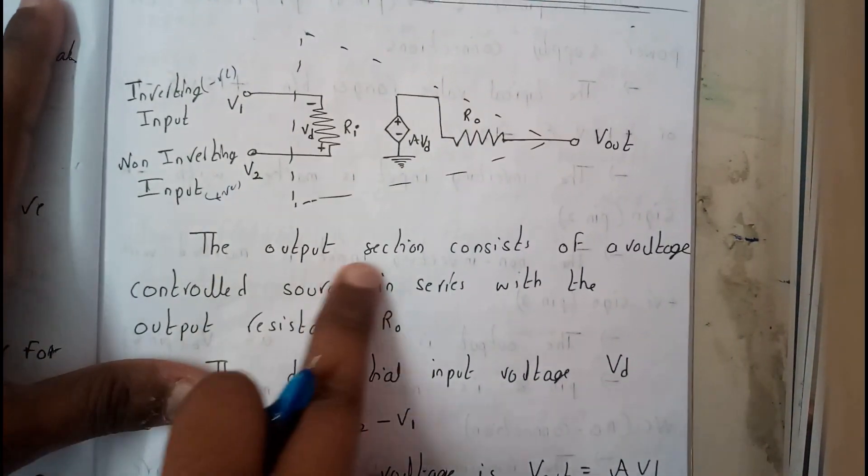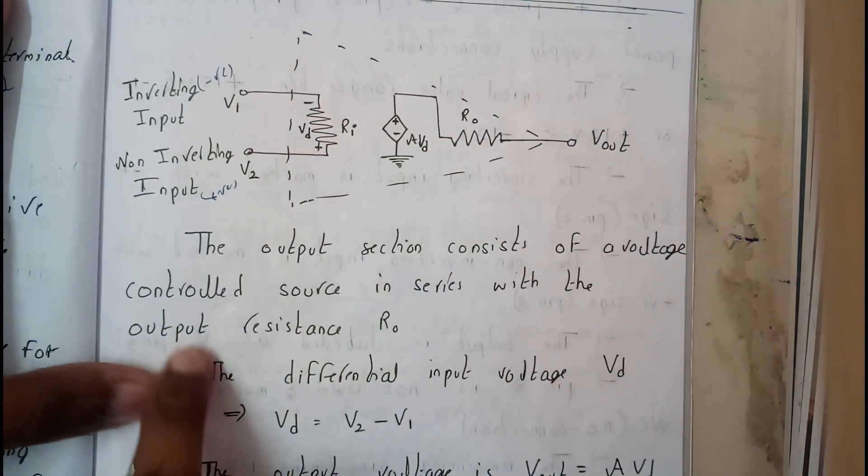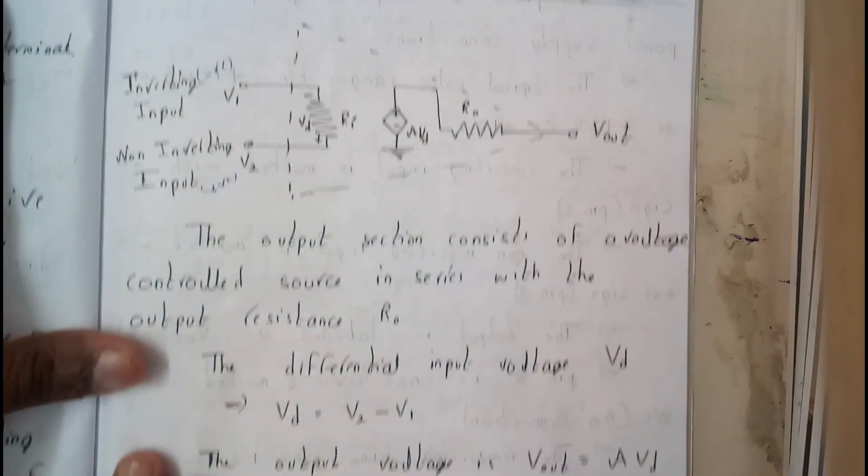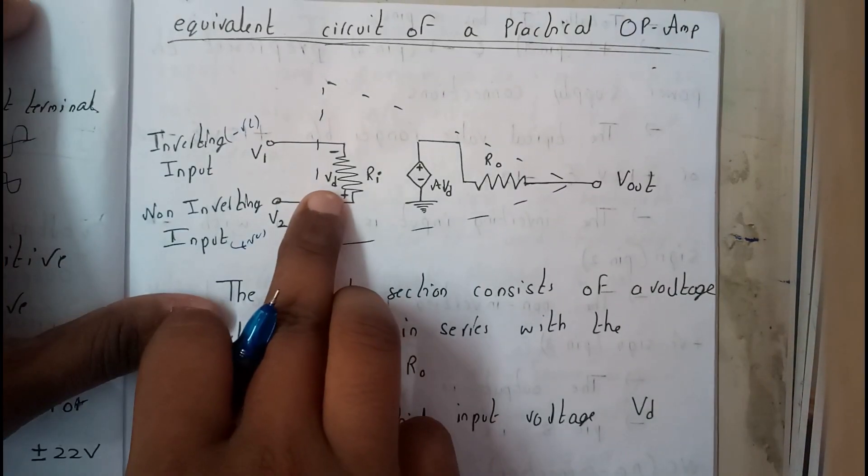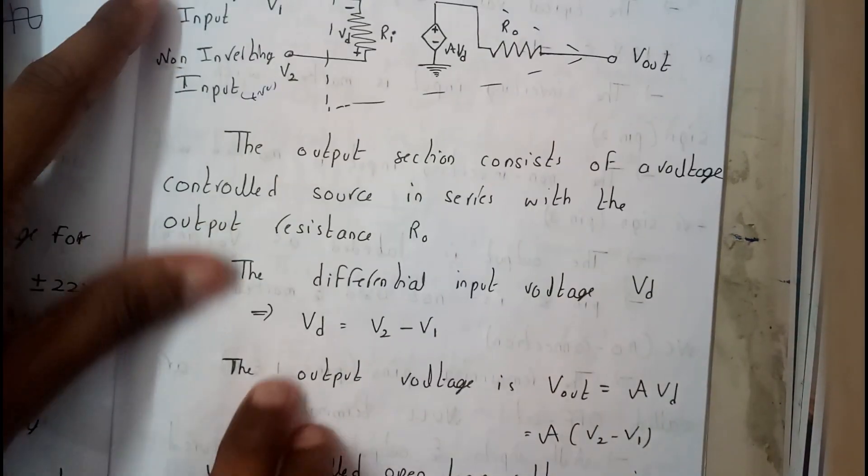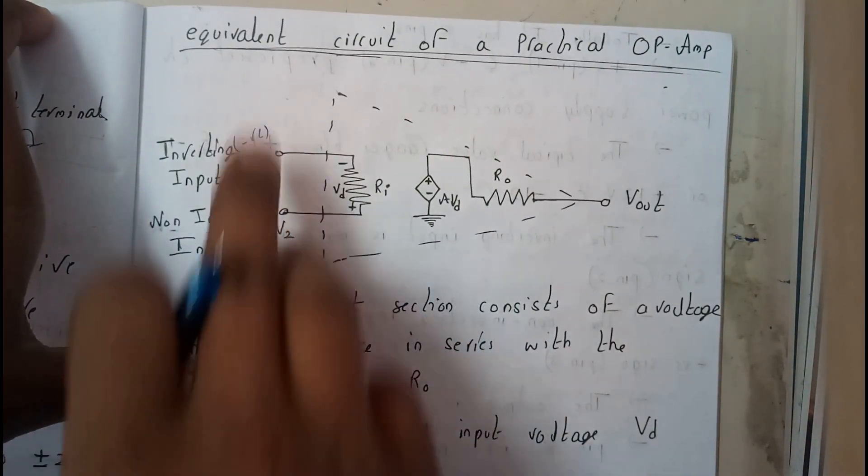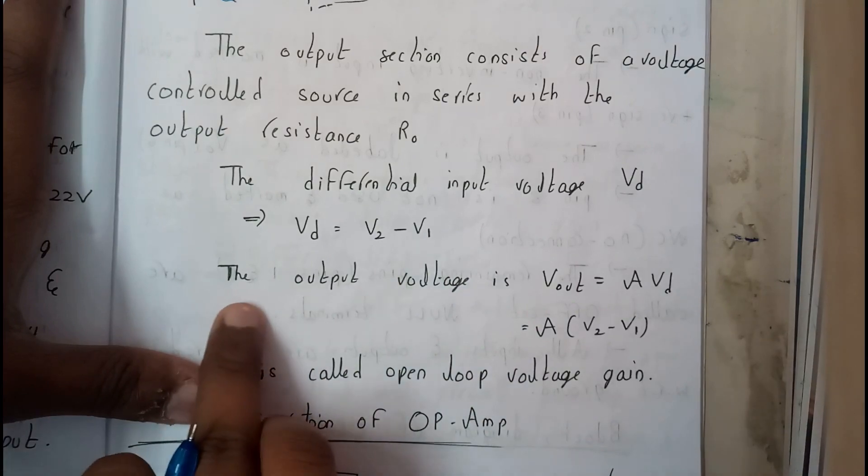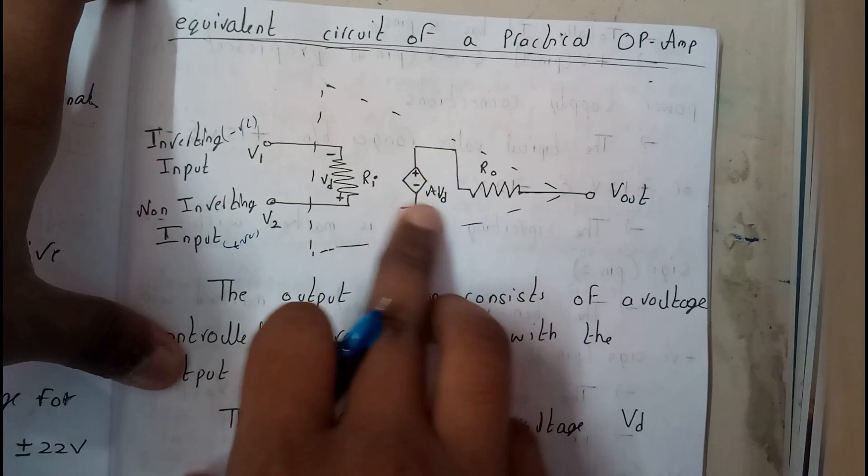So basically the output section consists of a voltage control source in series with the output resistance R naught. The differential input voltage VD is nothing but V2 minus V1. As V2 is positive and this is negative, that's how I got VD. So the output voltage is A into VD.